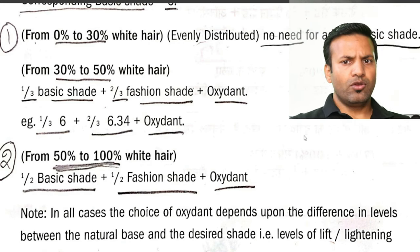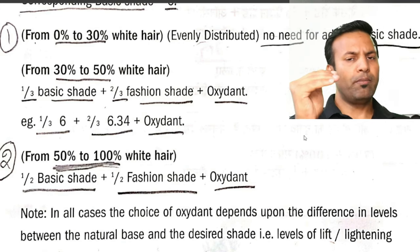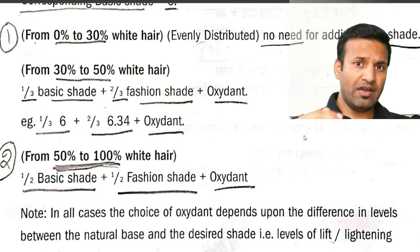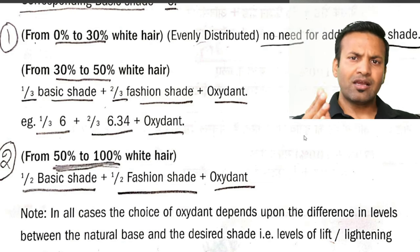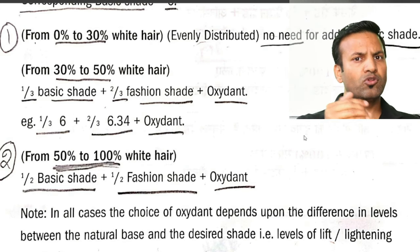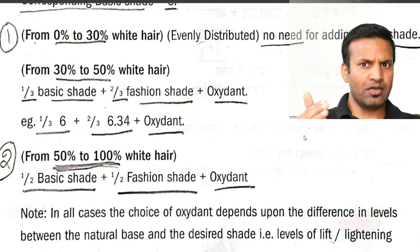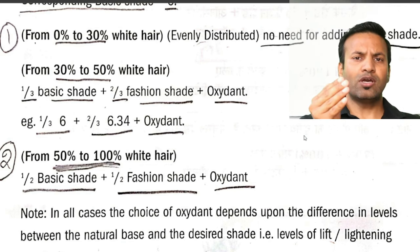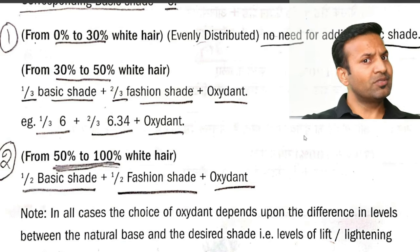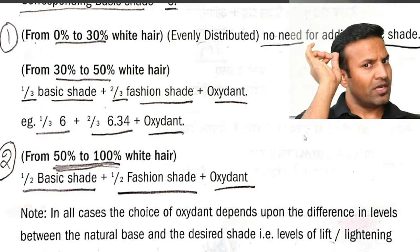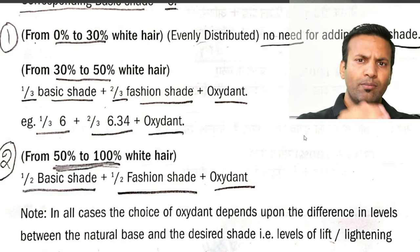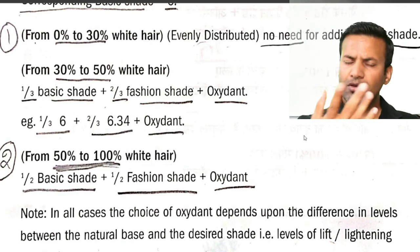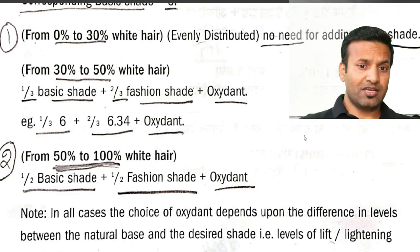एक चीज़ ध्यान रखिएगा: अगर आप Asian hair में काम कर रहे हो, तो maximum आप 5 level तक ही color कर सकते हो सफेद बालों को। 5 level से ऊपर जाते हो तो translucent effect आता है — हल्का सा सफेद झलक मारेगा। जो सफेद बाल है, उस पे अगर आप 6 number या 7 number का color करोगे, तो थोड़ा सा सफेद झलक मारेगा, एकदम से coverage नहीं होता। अगर आपको proper result चाहिए, तो आपको desire बालों के color के आस-पास का 5, 4, 3, 2, 1 number — कोई भी कर सकते हो — perfect result आएगा, और अच्छे से coverage होगी।